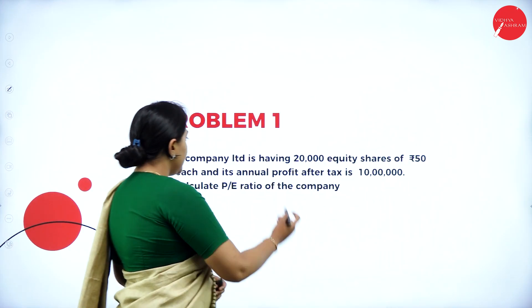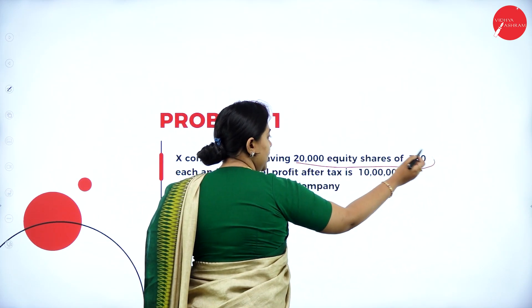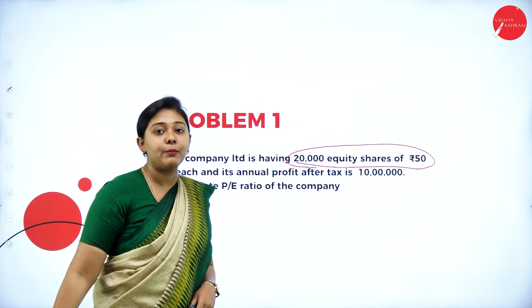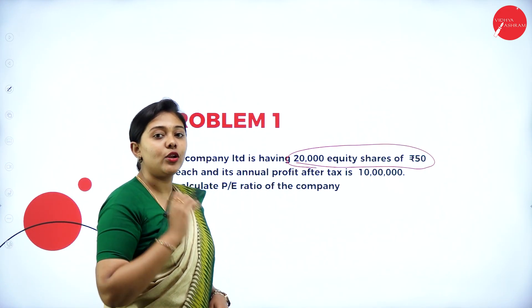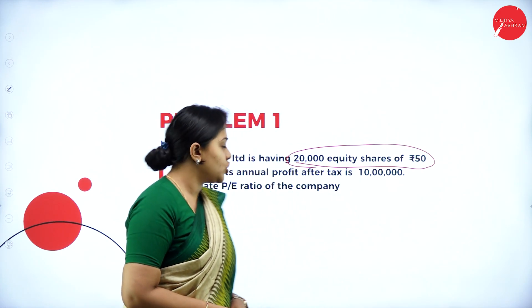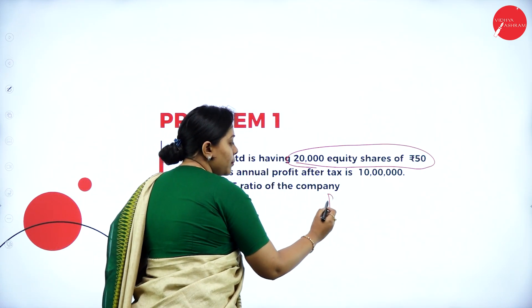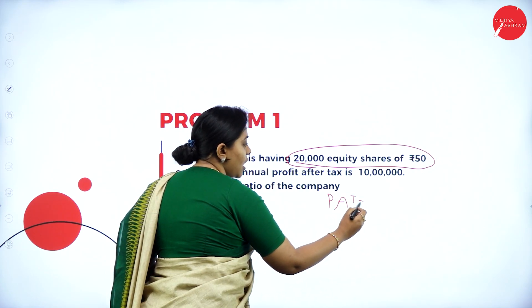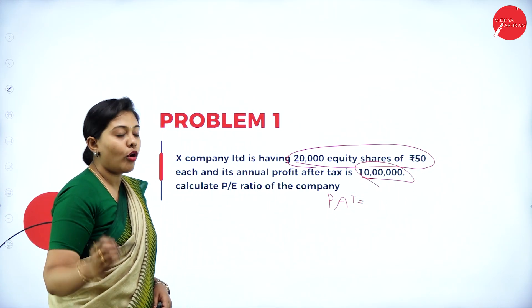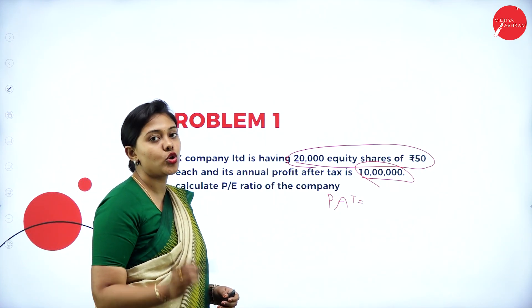X Company Limited has 20,000 equity shares of rupees 50 each. The market price per share is 50 rupees, and its annual profit after tax is 10 lakh. Calculate the price-to-earning ratio of the company.